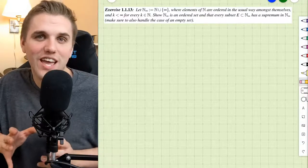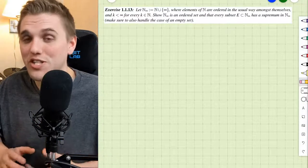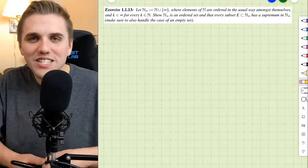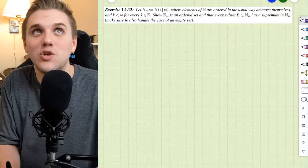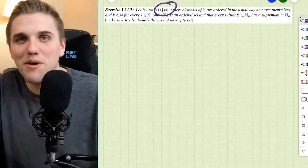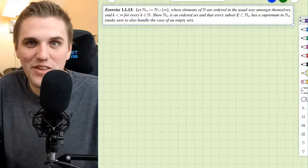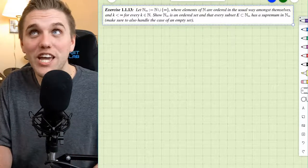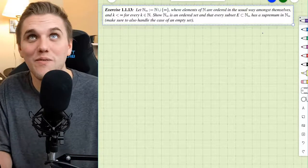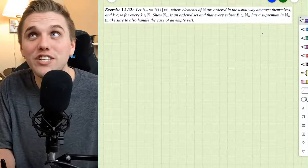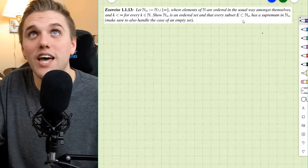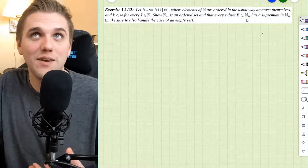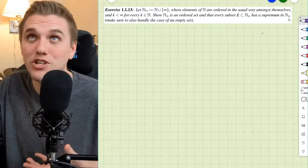It turns out that not every subset of the natural numbers has a supremum because there's no infinity. But let's see what happens when we decide to add the element infinity to our natural numbers set. What's going to be really interesting is we're going to show that every subset of this extended natural number set with infinity has a supremum inside this special set.